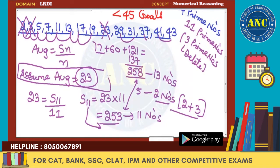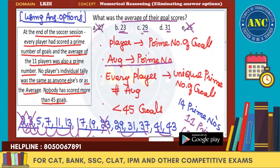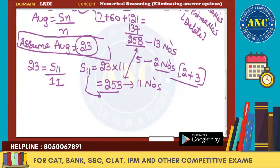The assumption that average = 23 is confirmed as fact because the sum of 13 remaining numbers is 258, and the sum needed for 11 numbers is 253. The difference of 5 = 2 + 3, meaning we eliminate 2 and 3. So the average of goal scores is 23. You may also cross-check with 29 and 31 — you will not get a consistent result.